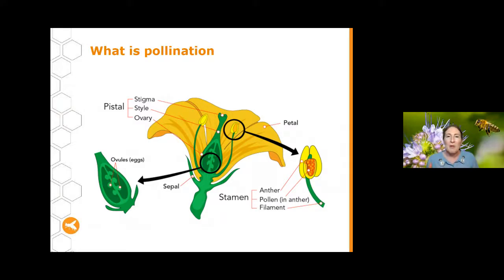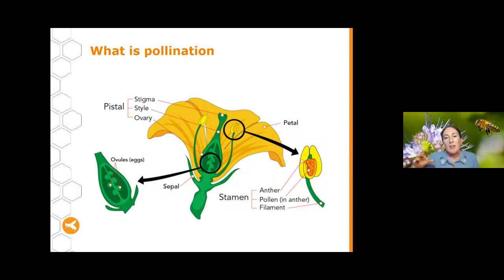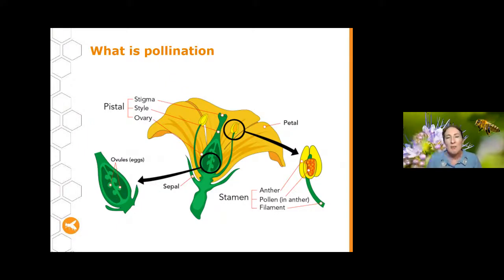Just like animals, in order for plants to reproduce, they need the male parts and the female bits to come together. In plants, the male bits are the stamen, which is the filament. On top of the filament is an anther, and in that anther is pollen — pollen is like the sperm of the male plant. It needs to come in contact with the female bit, which is the pistil, consisting of the ovaries where the eggs are, the style, and the stigma right on top. That pollen has to get from the anther over onto the stigma.